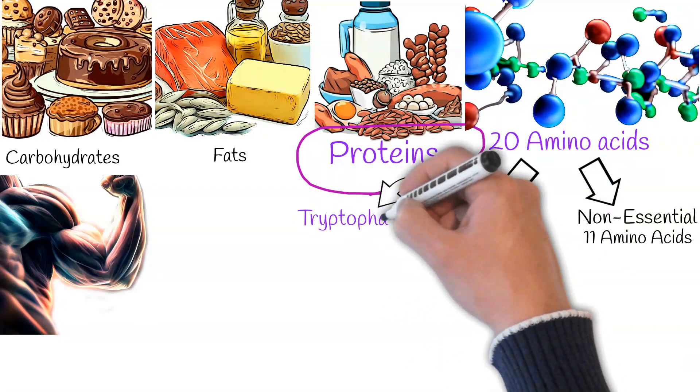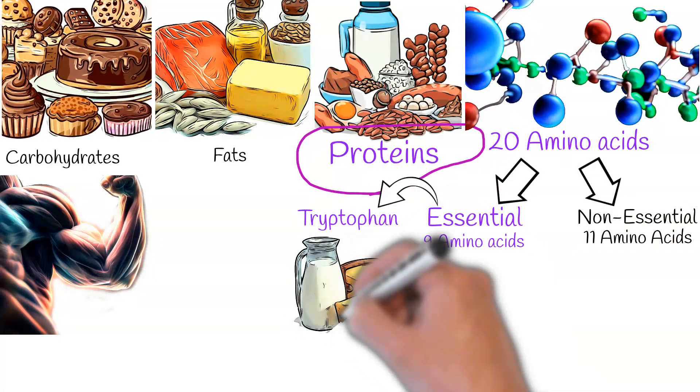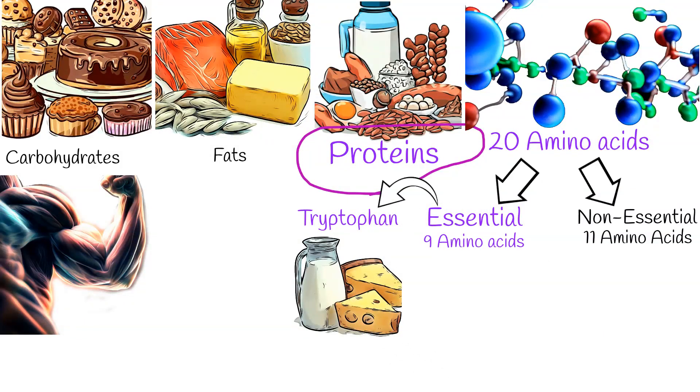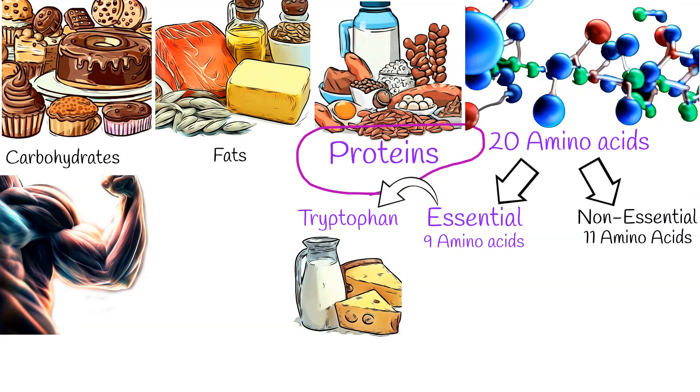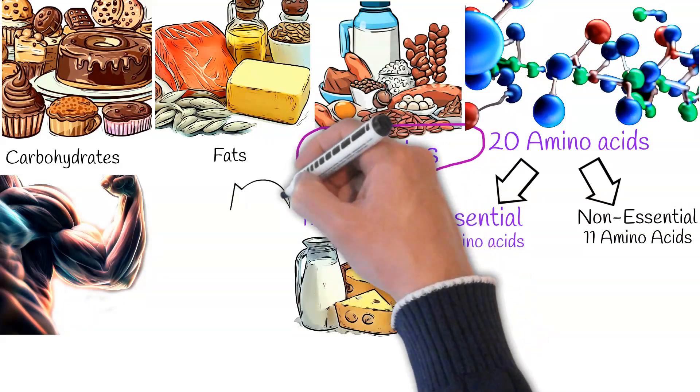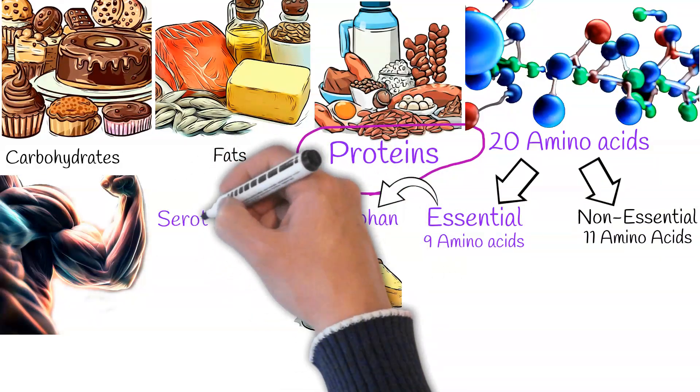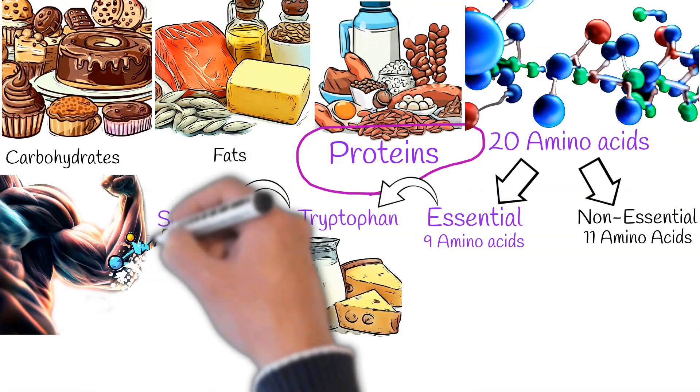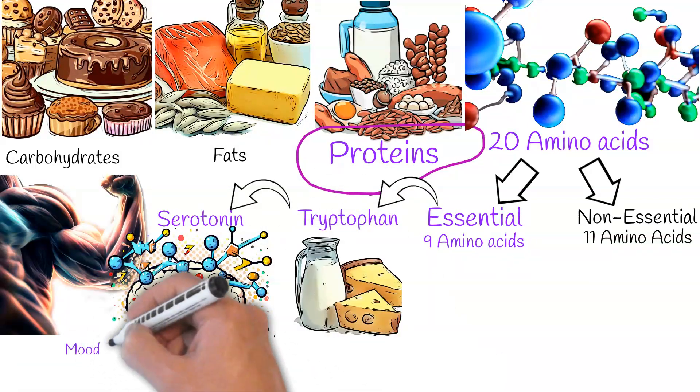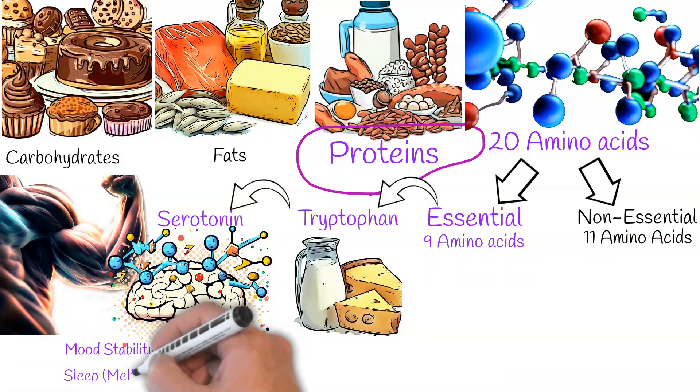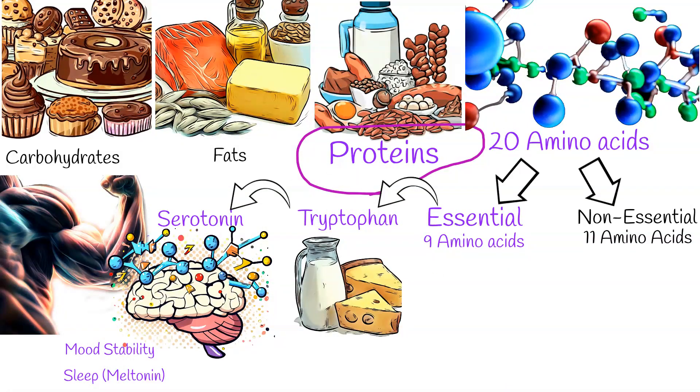Take, for instance, the amino acid tryptophan, found in foods like cheese, turkey, and eggs. Our body cannot produce tryptophan, even though it's a crucial component in the synthesis of neurotransmitters serotonin and melatonin. Serotonin plays a pivotal role in mood regulation and overall well-being, while melatonin is instrumental in managing our sleep-wake cycle. A deficiency in tryptophan can therefore lead to disturbances in sleep patterns and mood.